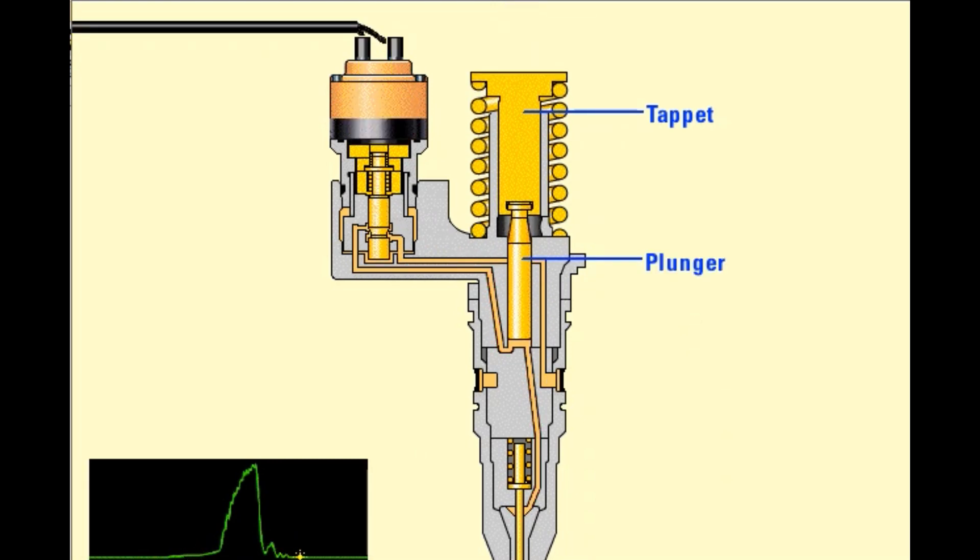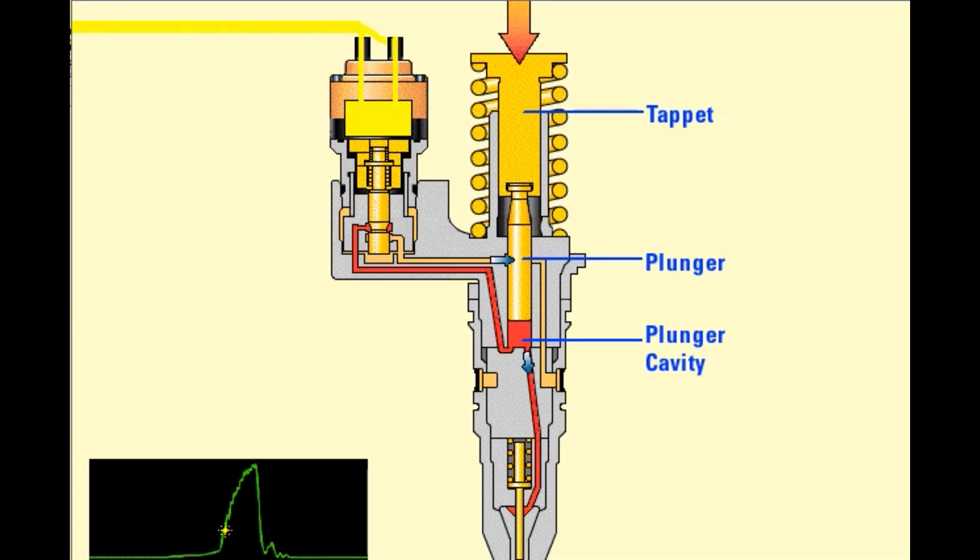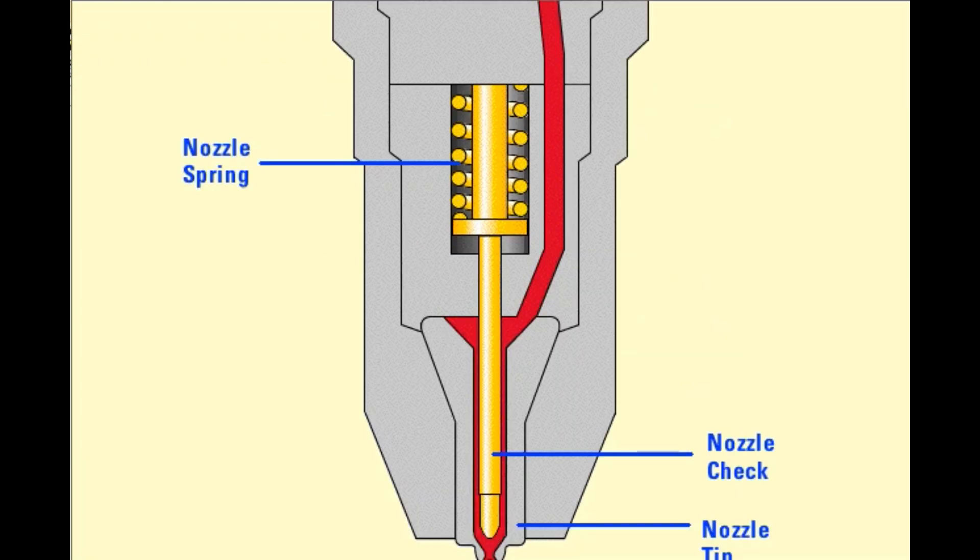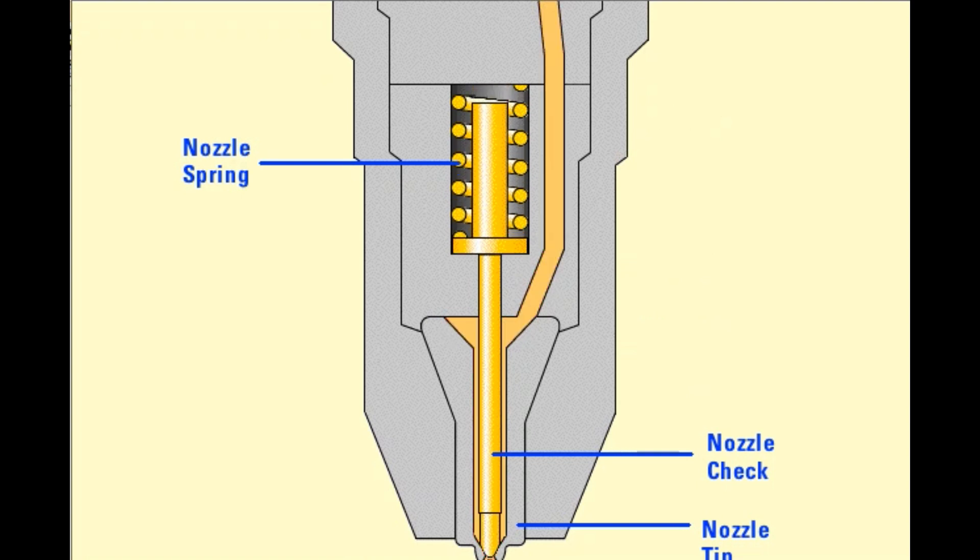The tappet in turn presses down on the injector plunger, which pushes fuel from the plunger cavity below the plunger. Fuel displaced from the plunger cavity can flow in two directions: fuel can flow to the nozzle assembly and to the nozzle tip.